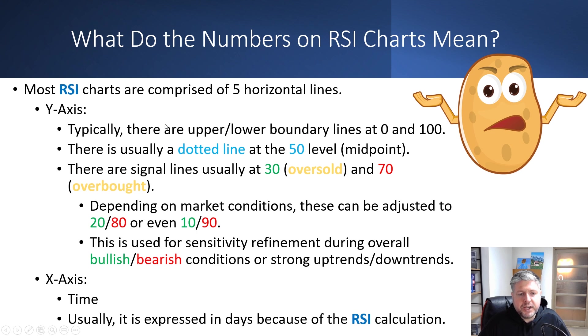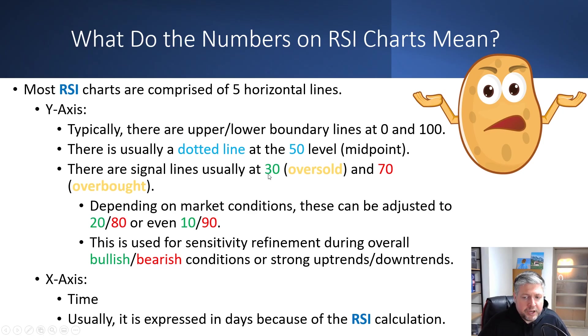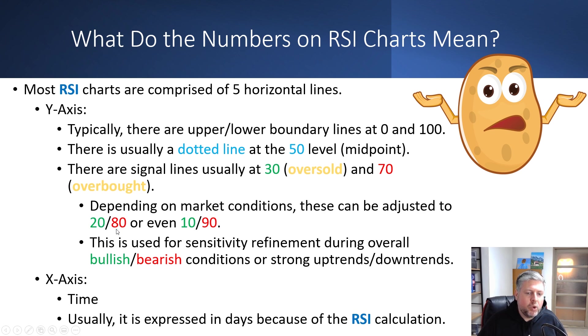What do the numbers on the RSI charts mean? Most RSI charts have five horizontal lines coming off the y-axis. There's an upper and lower boundary line at 0 and 100 — these establish the RSI range; you can't have an RSI above or below those points. There are signal lines at 30 and 70: 30 indicates oversold, 70 indicates overbought. Those were the levels that the original Wilder used in his textbook for RSI.